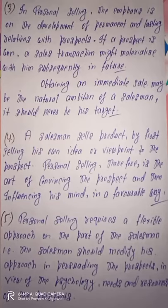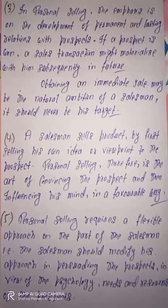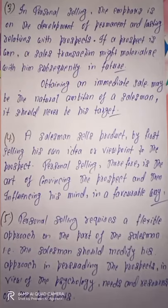The next feature of personal selling is that a salesman sells a product by first selling his own idea or viewpoint to the prospect. It is the art of convincing the prospect — yah bahut important point rehta hai personal selling mein — aur uske mind ko is tarah influence karna jisse ki wo aapke product ko purchase kare aur product ke regarding uska attitude positive ho jaaye.